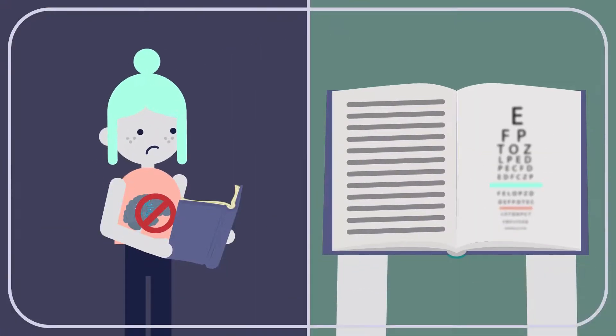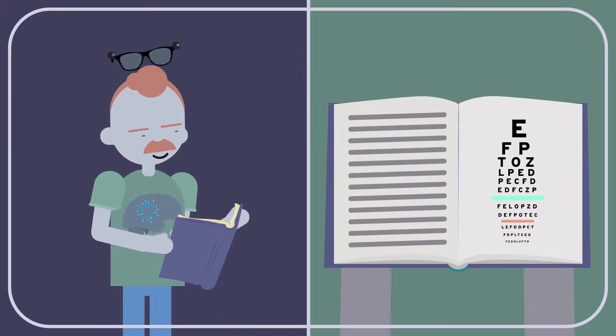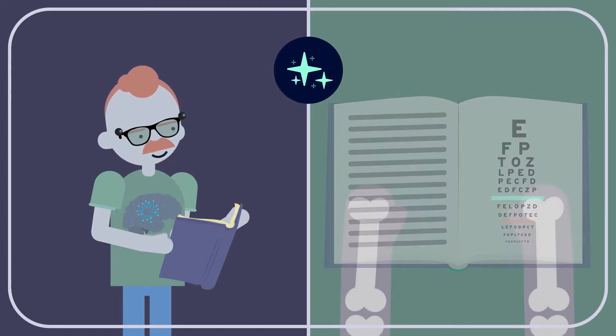For example, prescription eyeglasses count as a medical treatment because they're meant to assist people whose vision isn't functioning as it should. Augmented reality glasses, by contrast, count as an enhancement because they help you move beyond a normal level of function.